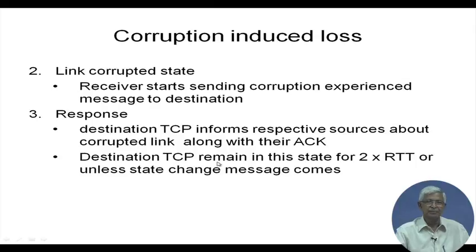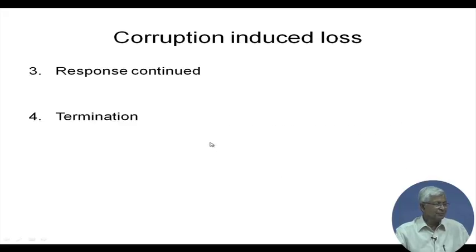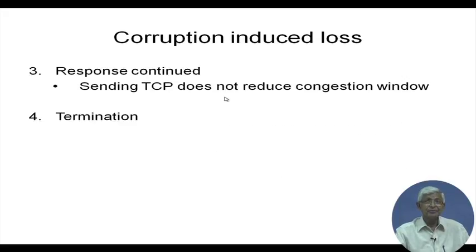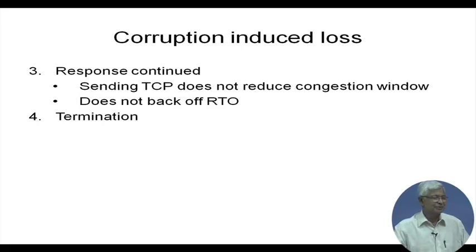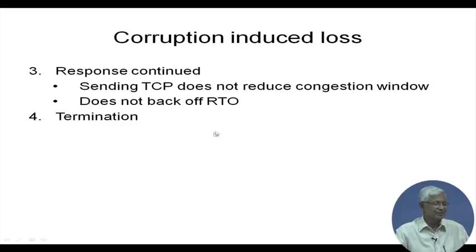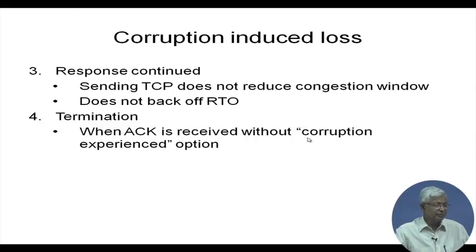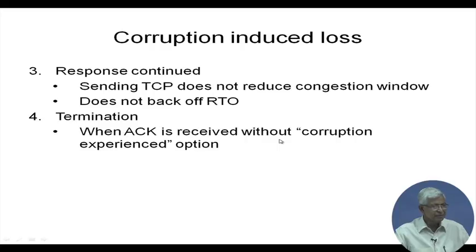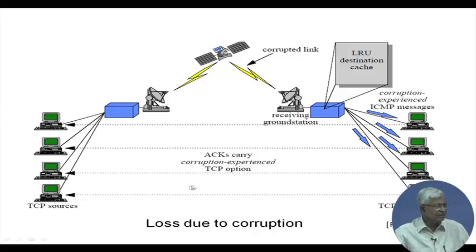The destination TCP simply waits during the corruption period. The sending TCP does not reduce the congestion window and does not back off its RTO timeout — it does not perform congestion control. When an acknowledgement is received without the corruption-experienced flag, the TCP exits the corruption state and starts working normally.